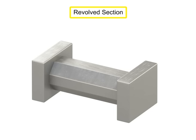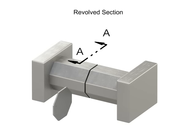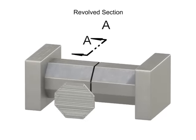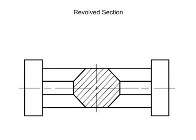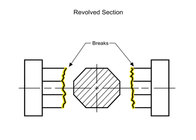A revolved section is created when the cutting plane slices through the feature, but the cut shape is rotated 90 degrees and shown directly on the regular view. Sometimes the new section is shown without brakes, and sometimes it is shown with brakes.